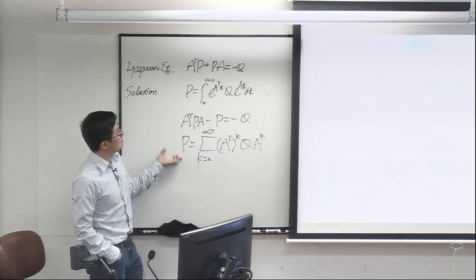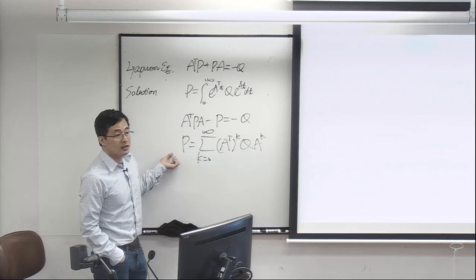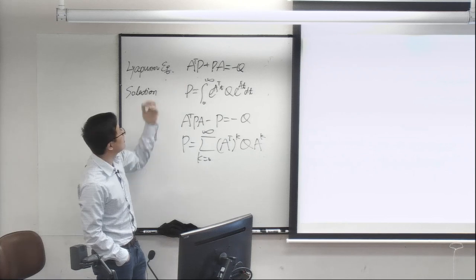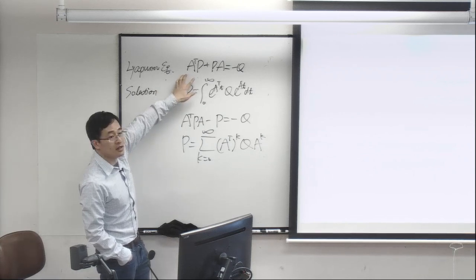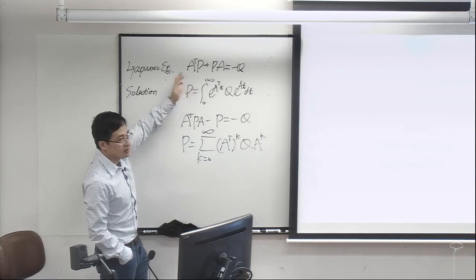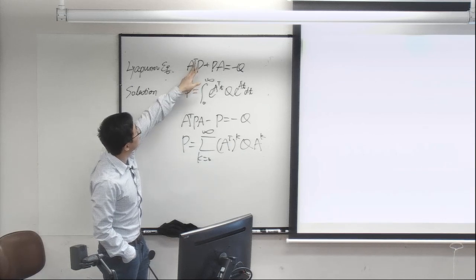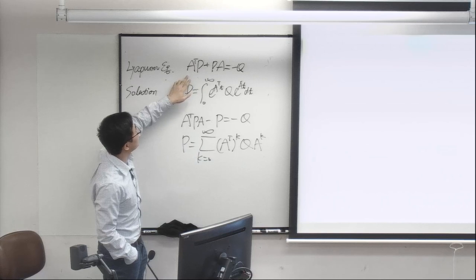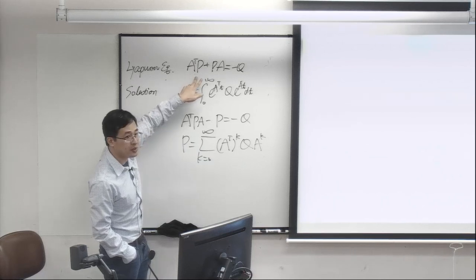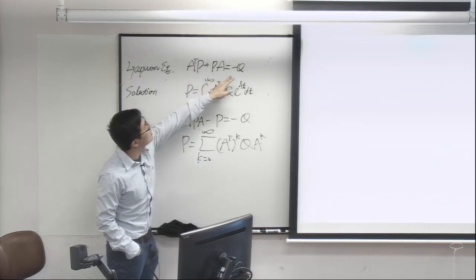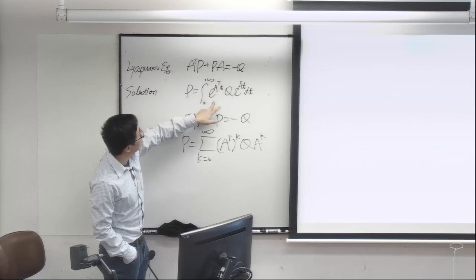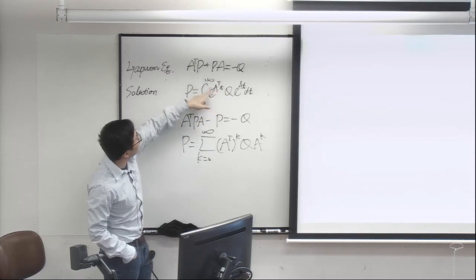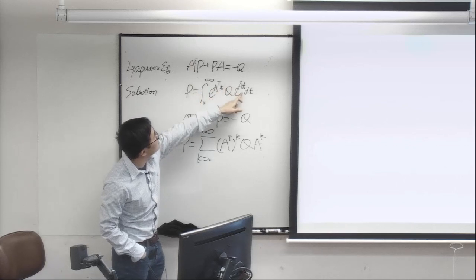I wrote down a bunch of very important equations for today's lecture. These are the two Lyapunov equations we talked about last time. The first is the continuous-time Lyapunov equation: A transpose P plus P A equals negative Q. The solution, if it exists, is the integral of E to the A transpose T times Q times E to the A T, dt.